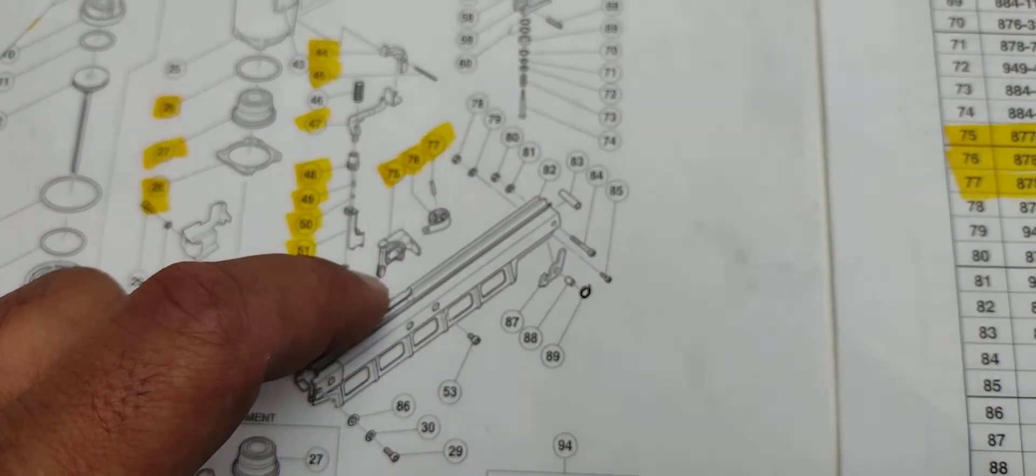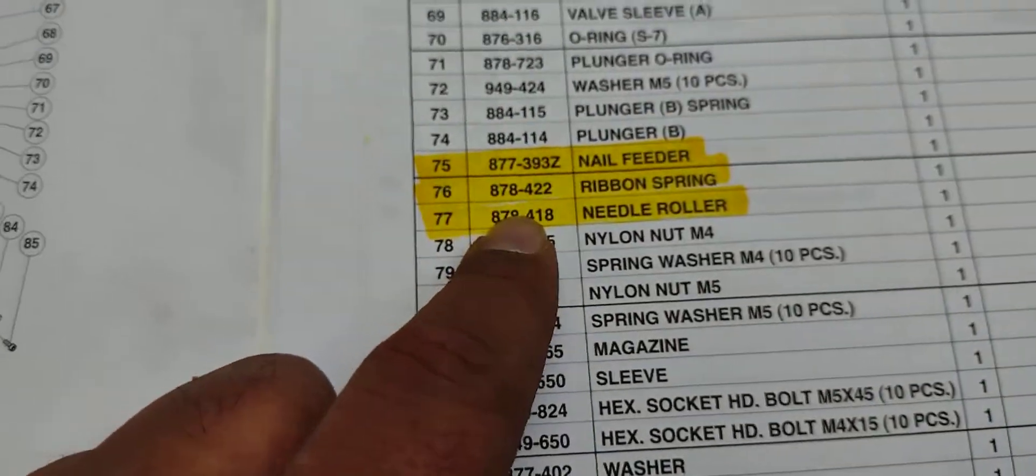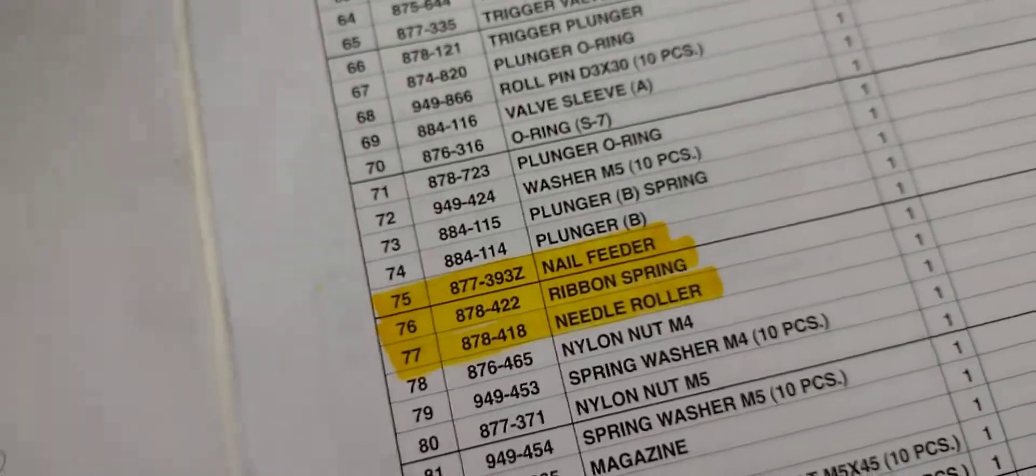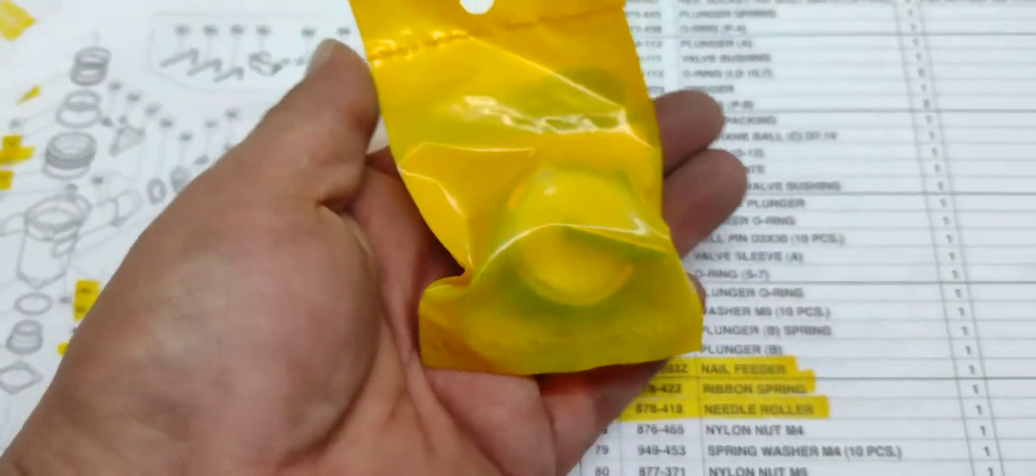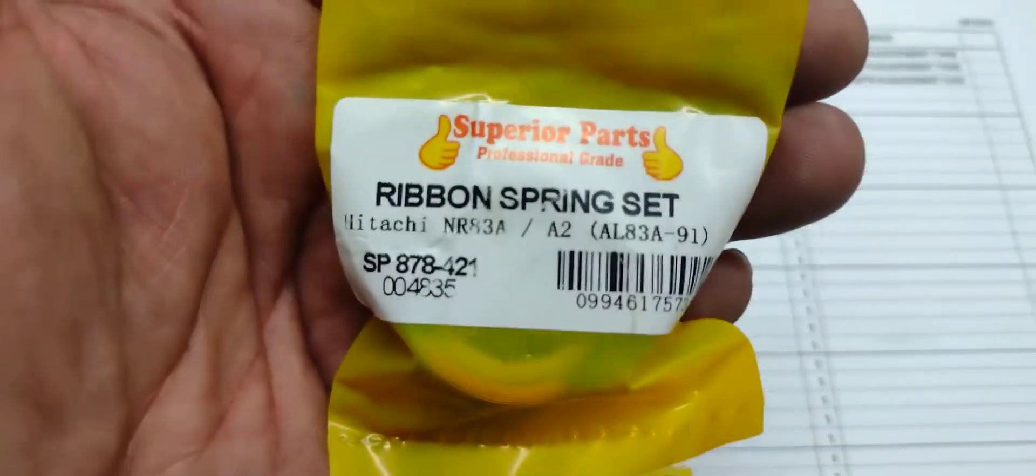This is the nail loader, the one that holds the nails and the spring over here. It comes in two different sets, but if you purchase it through Superior Parts, it's going to come all together. See the little spring, and this is the actual number for that. You can see, I got a little closer there.